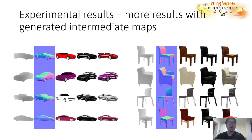Here we show more visual results with generated intermediate maps, including the detailed normal map, the diffuse orbital map, and the realistic specular map. The last column is the final generated images.